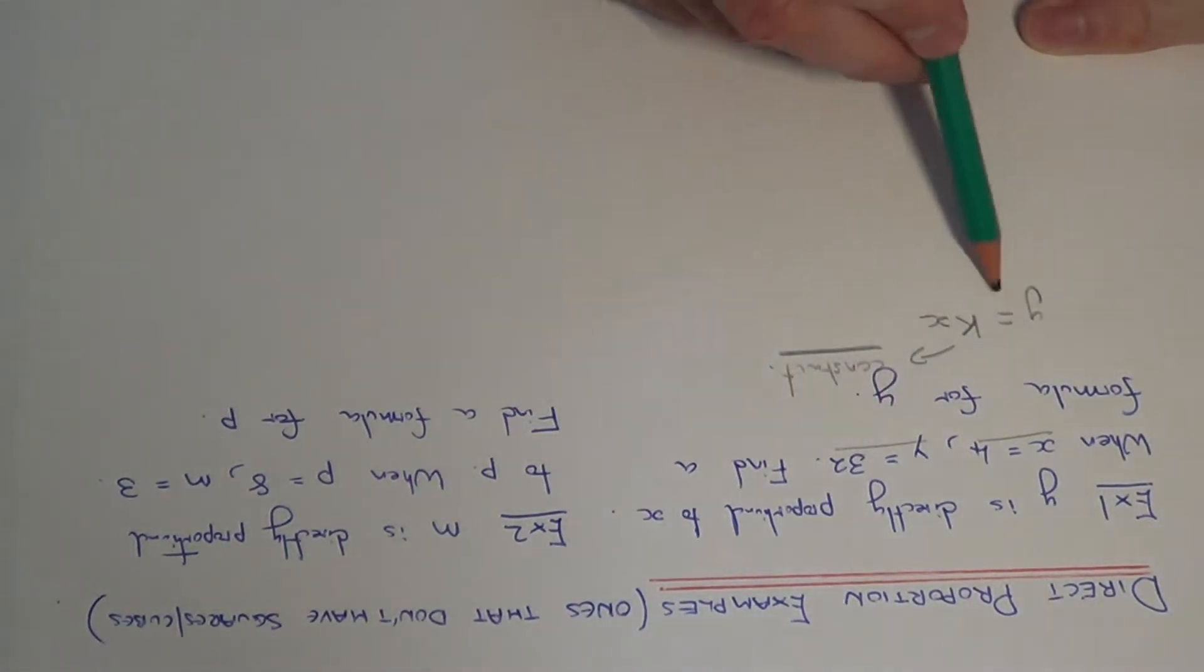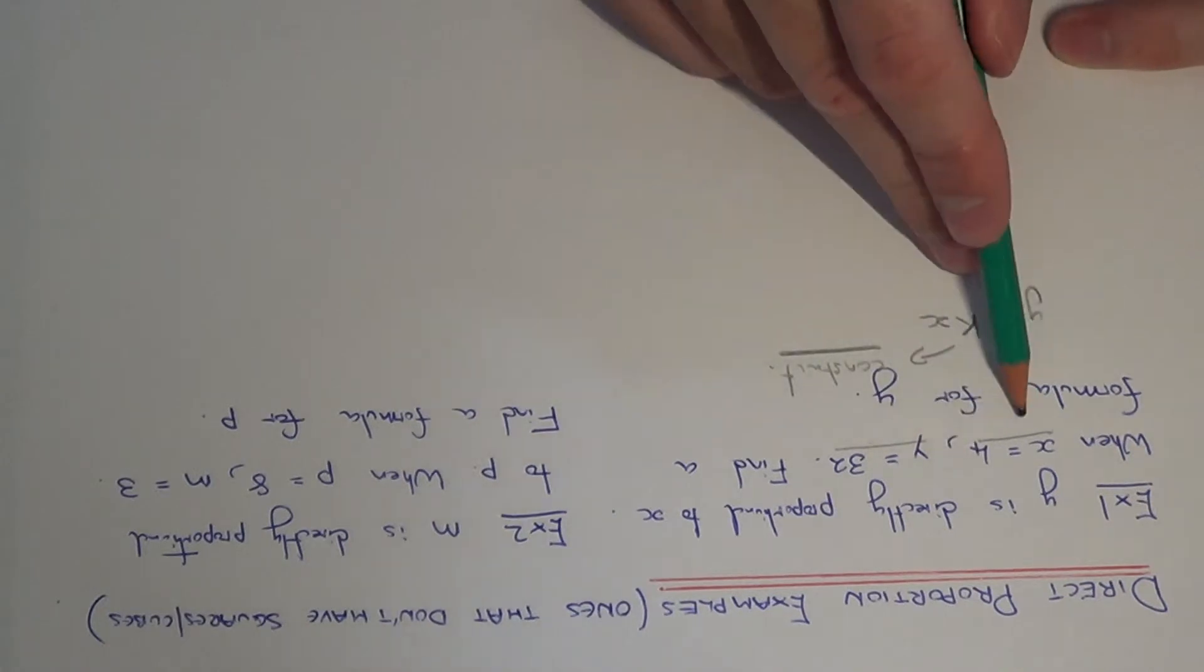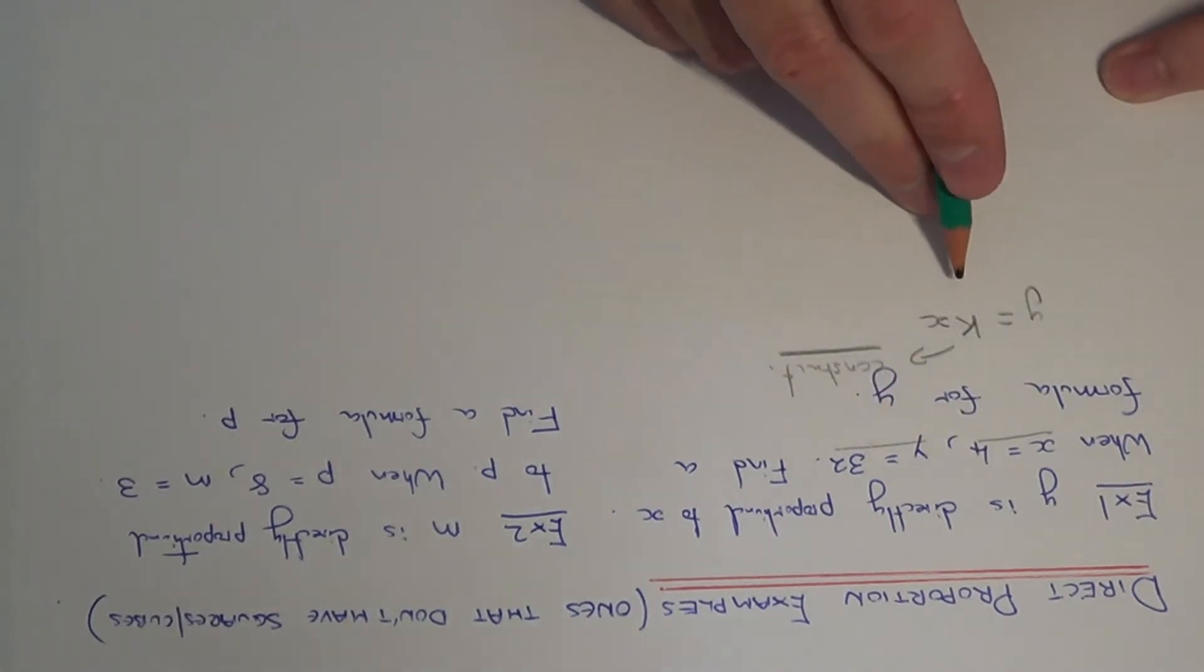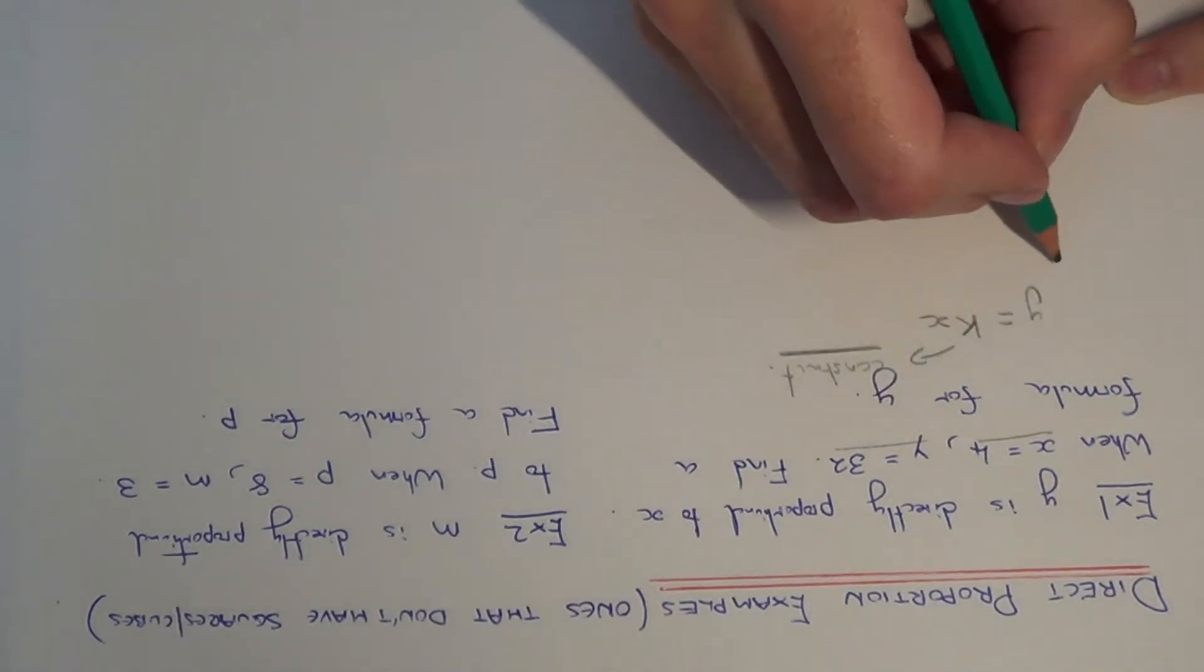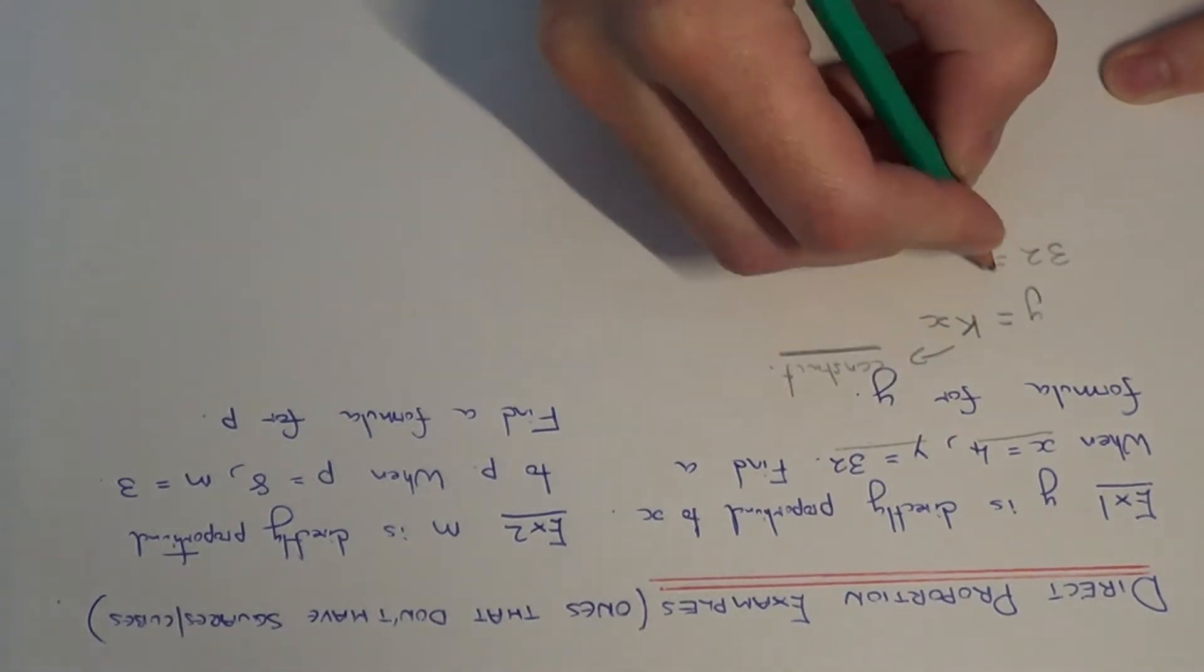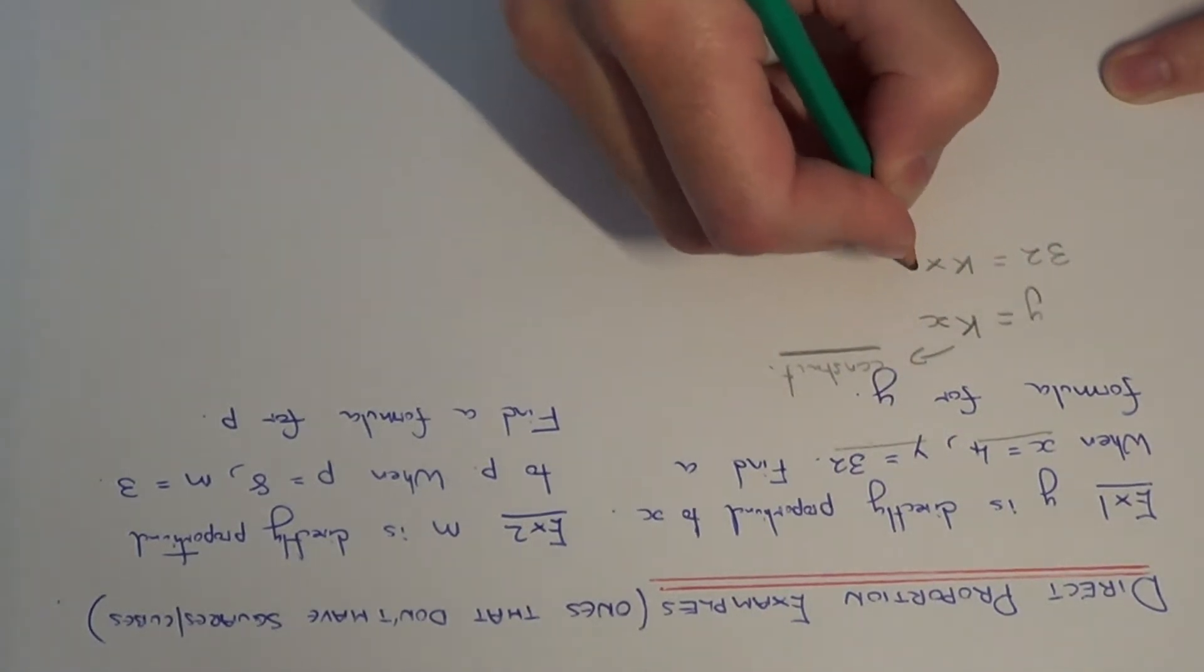So once we've written this down, we just need to substitute x equals 4 and y equals 32 into this formula here. So we've got 32 is equal to k times by 4.